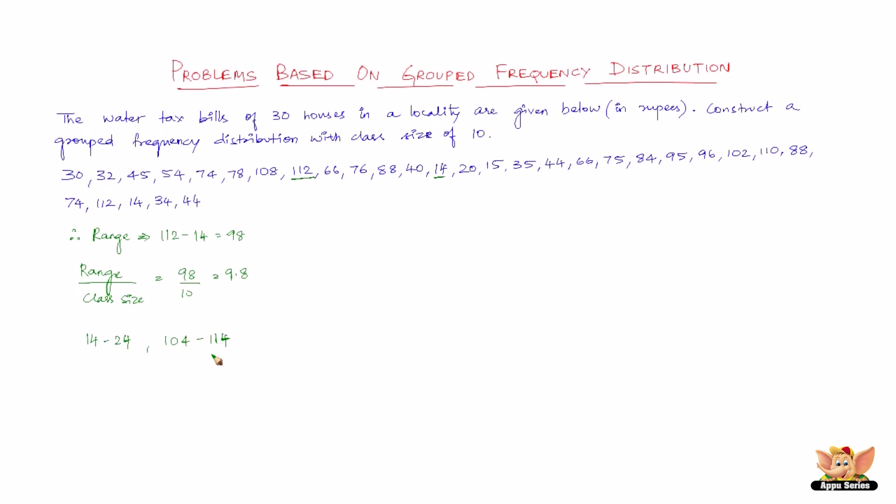In view of the above said things, we construct the frequency distribution table as follows. Let us first write down three columns. The first one is the variate, which is the bill in rupees. The second column is tally marks. Third one is frequency. There is no change as far as the three columns are concerned between discrete frequency distribution and grouped frequency distribution, but the way we write the variates in grouped frequency distribution varies from discrete frequency distribution.